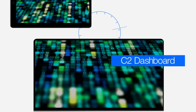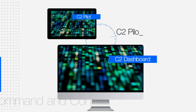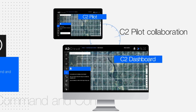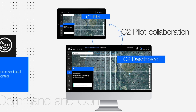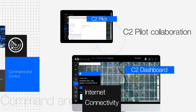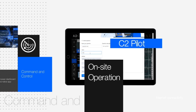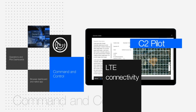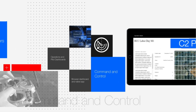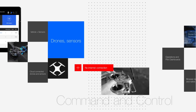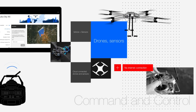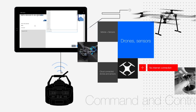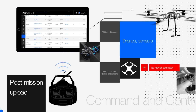UAV operations are planned and executed using a precise collaboration of capabilities between the C2 and C2 pilot service platforms. The C2 dashboard is available on the browser and requires internet connectivity to work. The C2 pilot app is designed for on-site operations and requires LTE connectivity to sync with the main C2 platform. However, in the absence of LTE signals, missions can still be flown by pilots using the controller Wi-Fi network with no loss of flight or data gathering capability. In this case, real-time data transmission will be downgraded to post-mission data uploads.